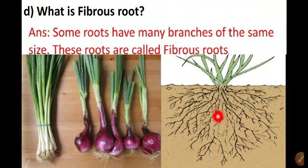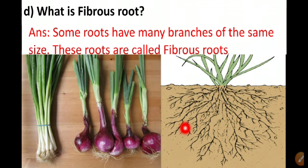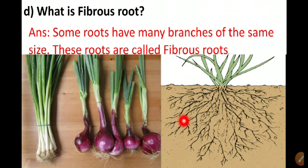You can see here some examples of fibrous roots. These roots are very thin and weak and they have branches of the same size.